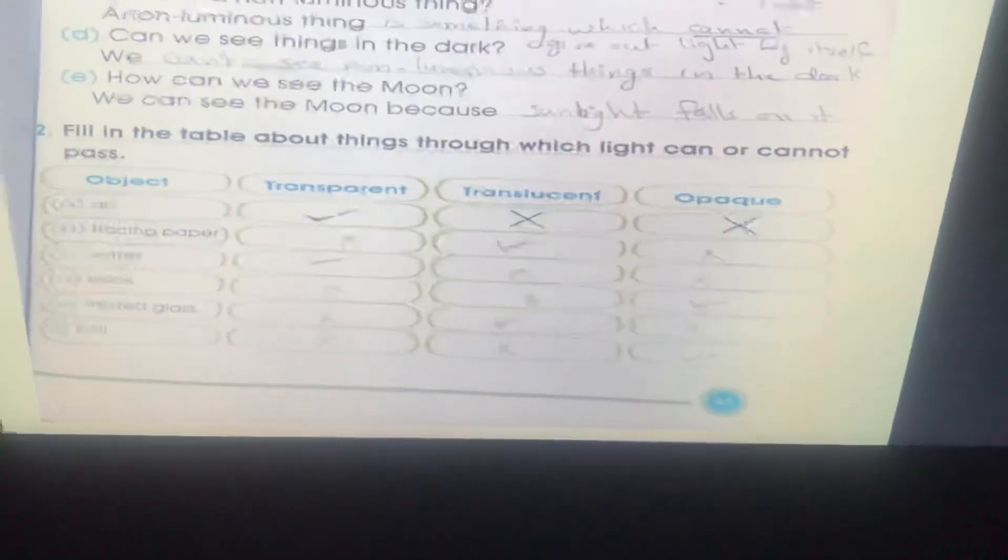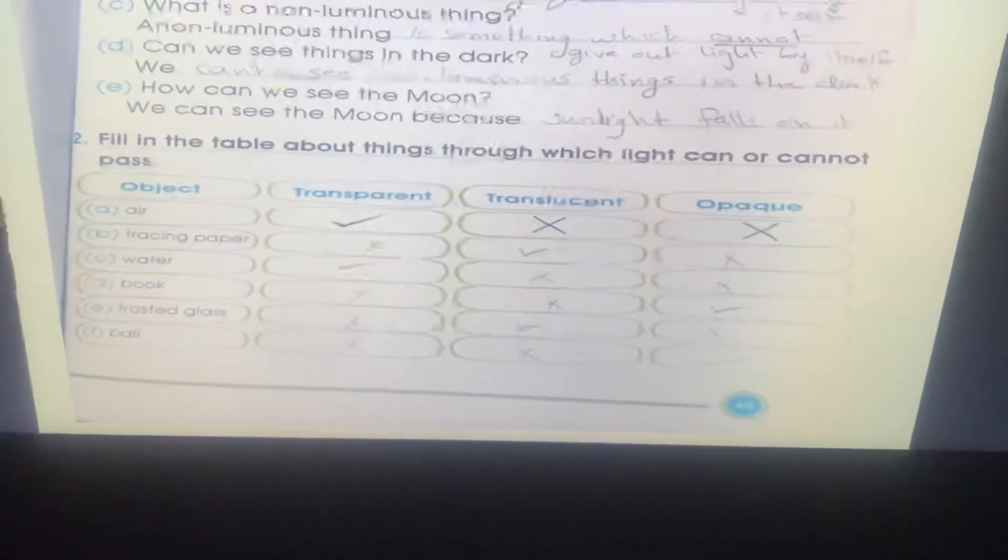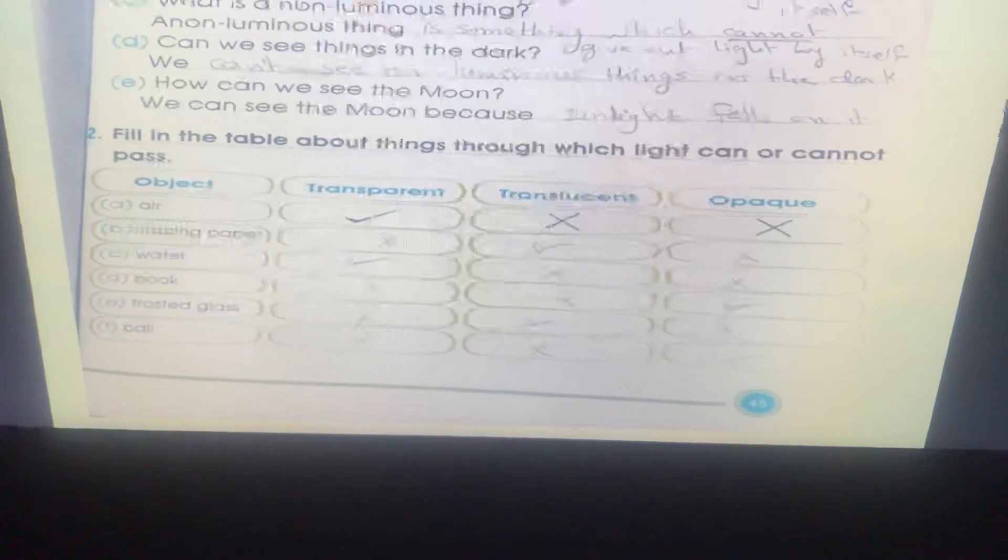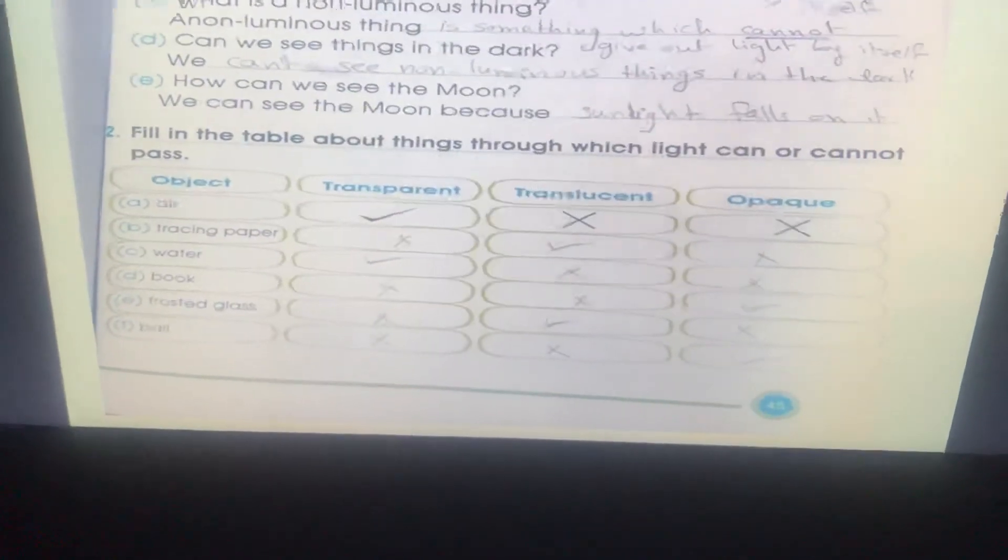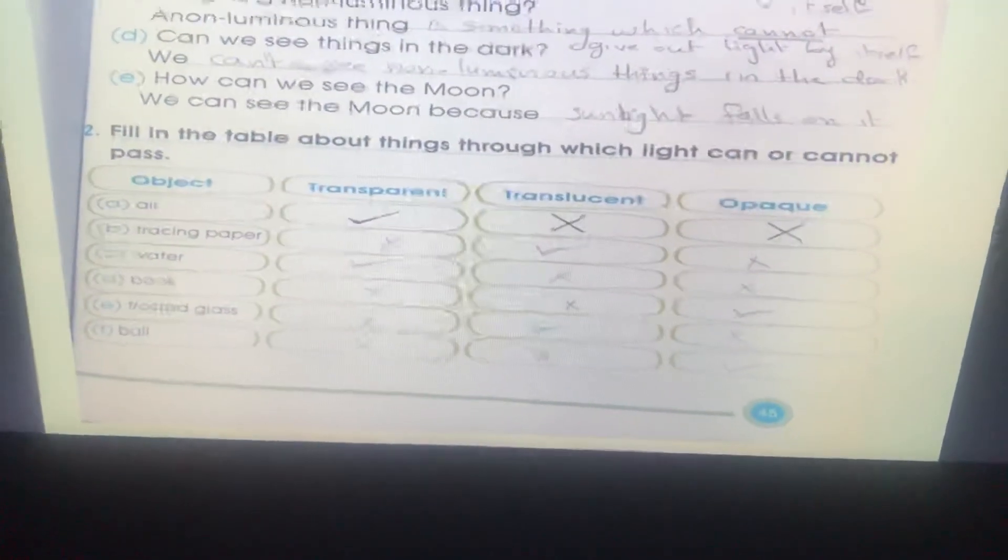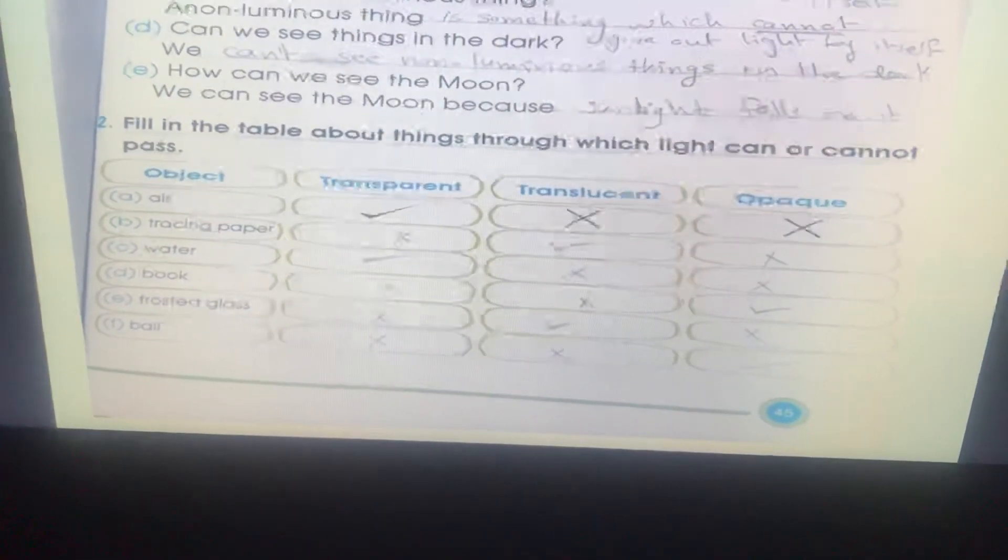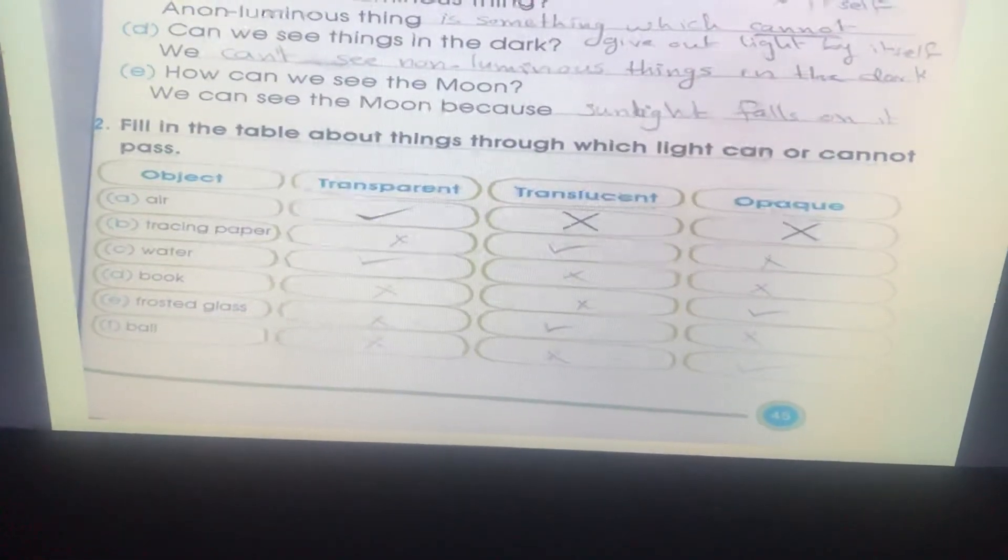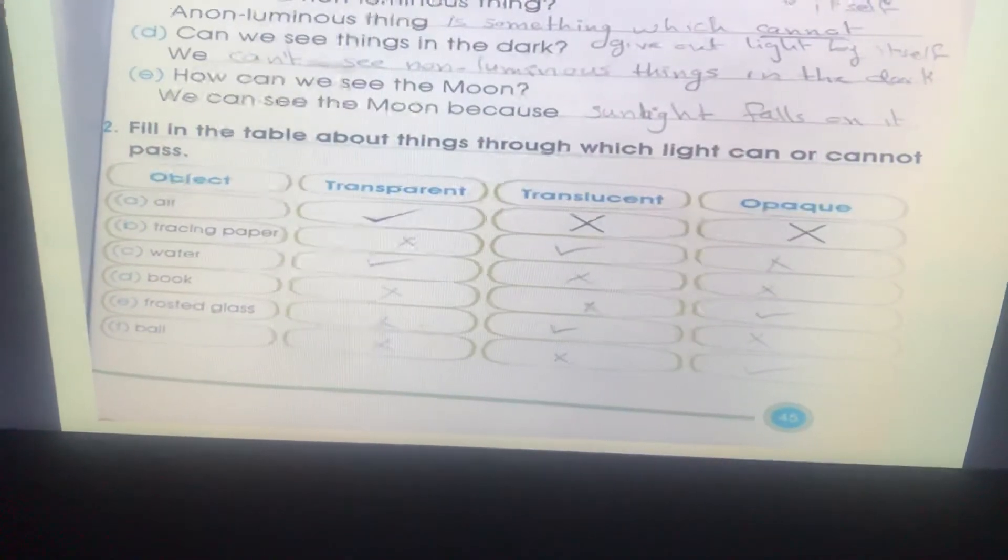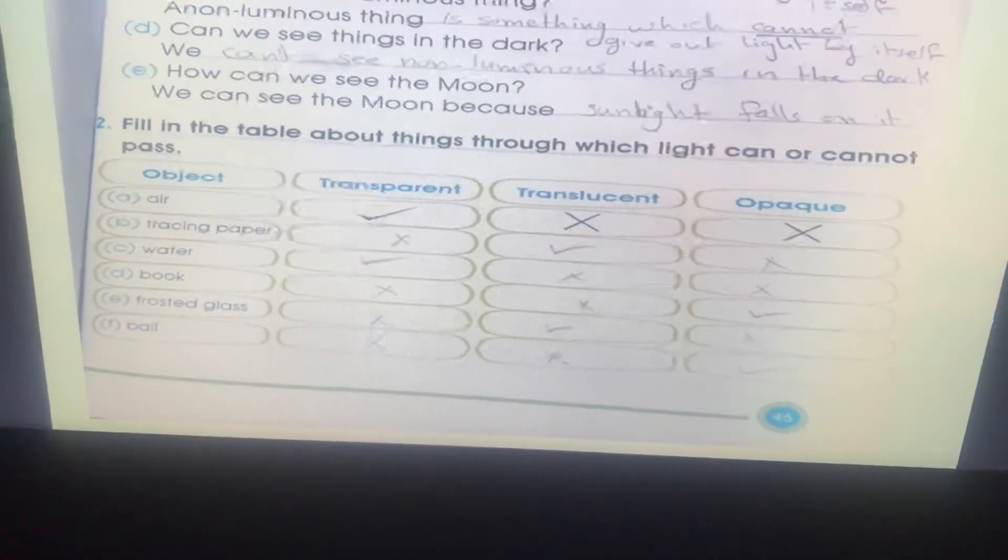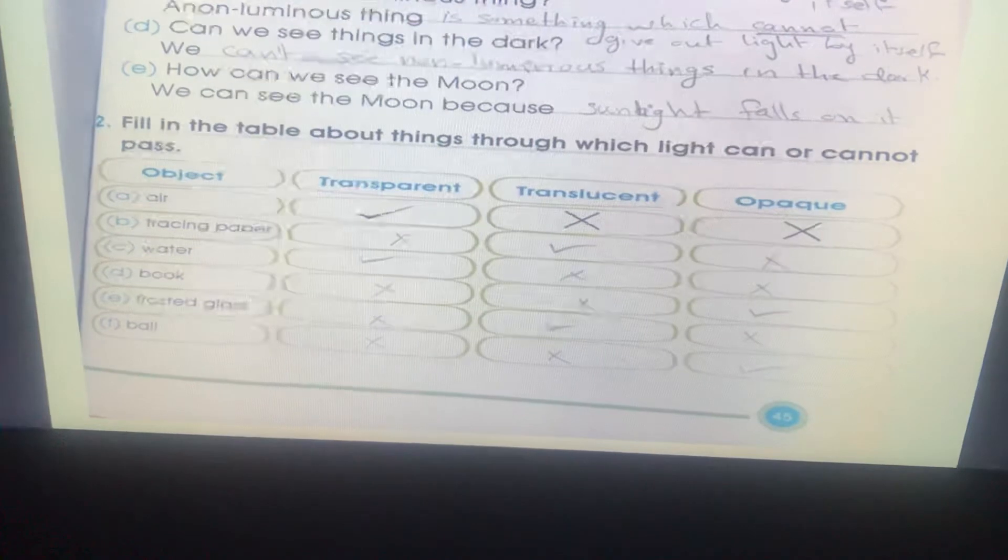Fill on the table about things through which light can or cannot pass. Air is transparent. Tracing paper is translucent. Water is transparent. Book is opaque.